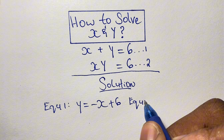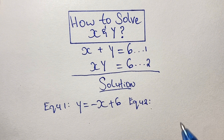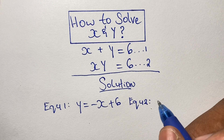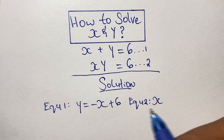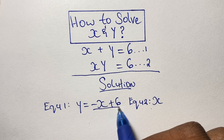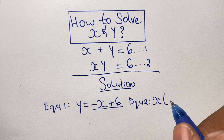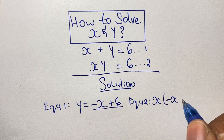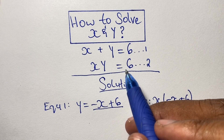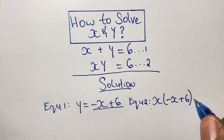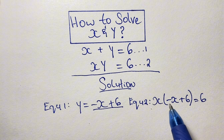Then we take equation 2 and substitute the value of y into it. We take the value of y, which is negative x plus 6, and put it in place of y in equation 2. So we have x times (negative x plus 6), and that is equal to 6.